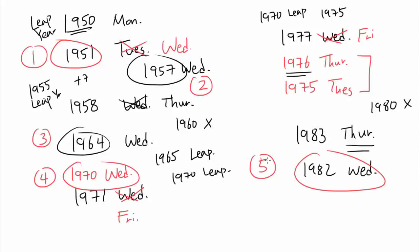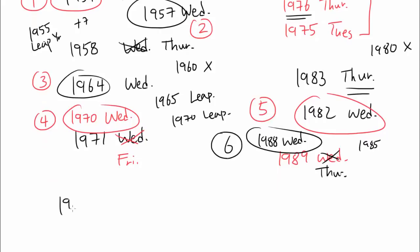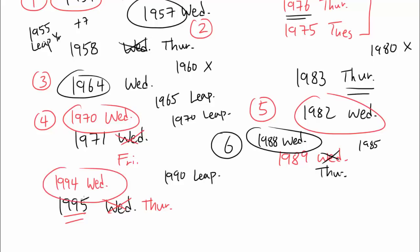Adding 7 to 1982, we may expect 1989 to be Wednesday. But 1985 is a leap year, so 1989 is actually Thursday, meaning 1988 was Wednesday — that's six. Adding 7 to 1988 gives 1995. We'd expect Wednesday, but 1990 is a leap year, so 1995 is Thursday. Note that 1995 being a leap year doesn't change this to Friday, because the extra day is added at the end of February and we're looking at February 14th. So 1995 is Thursday, meaning 1994 was Wednesday — that's seven.